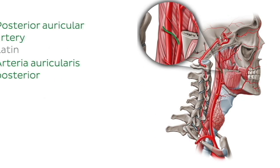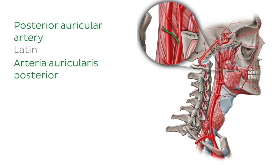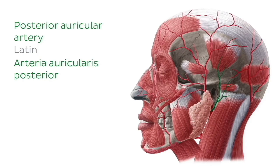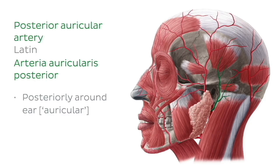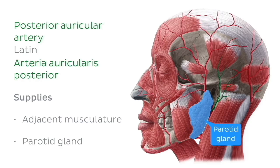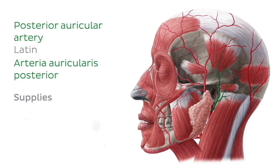Next, we have the posterior auricular artery arising from the external carotid artery, posterior to the ramus of the mandible. We can see the beginning of this artery here highlighted in green. Looking at the left side of the face and neck, with the posterior auricular artery highlighted in green, we can see it travelling posteriorly around the ear. This artery supplies the adjacent musculature, the parotid gland, and parts of the ear and scalp.